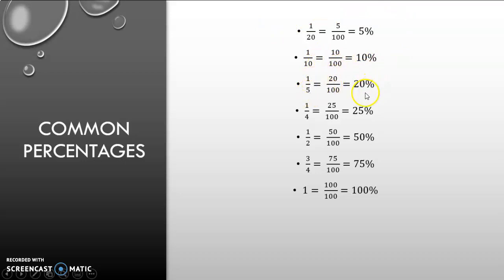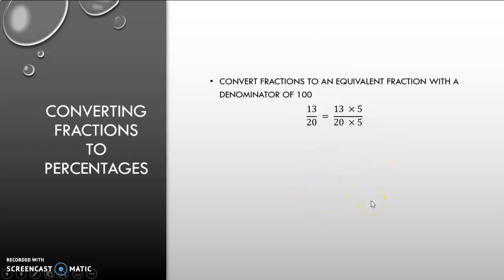A 5th is equal to 20% because we multiply 5 with 20 to get to 100. What we do at the bottom, we must do at the top. A quarter will be 25% because you multiply 4 with 25 to reach 100 and you also do at the top. A half will be 50%, 3 quarters 75% and 1 whole will be equal to 100%.